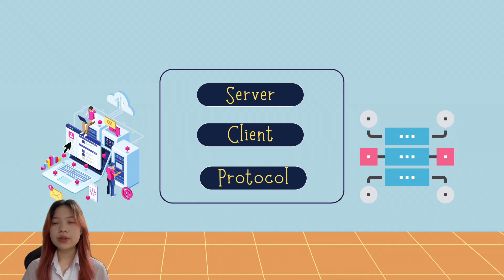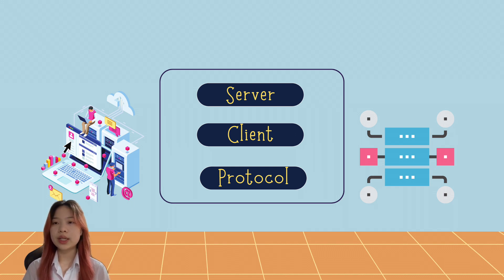Server: the server exports one or more directories to be shared with the client. Client: the client machine mounts the exported directories from the server and accesses the files as if they were local. Protocol: the NFS protocol is used to facilitate communication between the server and client machines.